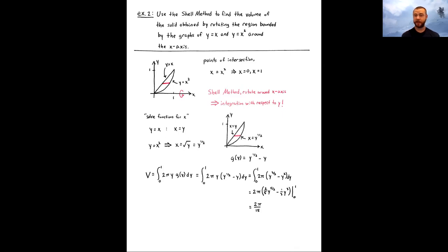That is basically the function we plug into the integration with respect to y version of the shell method. Don't forget there is a factor of y, just like the integration with respect to x version has a factor of x. So we have an integral from 0 to 1 — referring to the y interval, which coincidentally is the same as the x interval — and we integrate 2πy times g of y with respect to y. Apply the power rule for antiderivatives, distributing the factor of y in. y times y to the one-half gives y to the three-halves, and then you also get y squared. If you're careful and plug in 0 and 1, you should get 2π divided by 15.